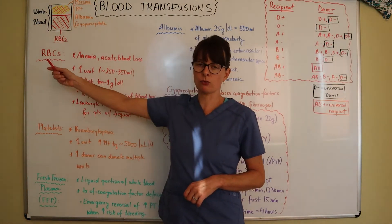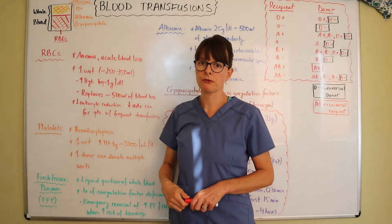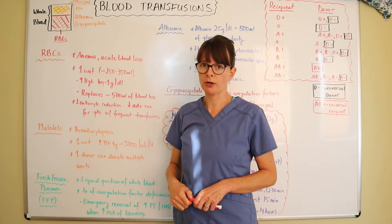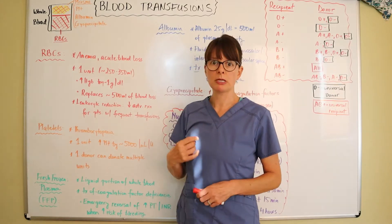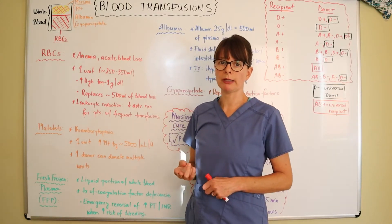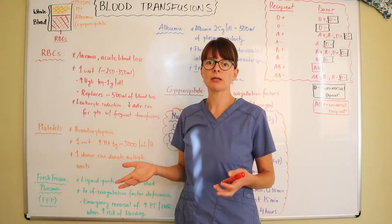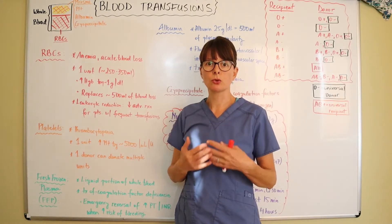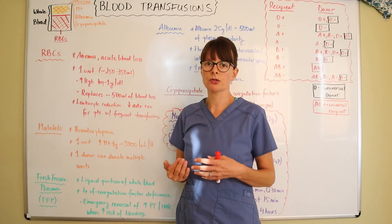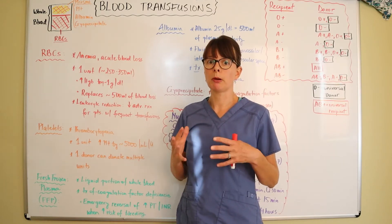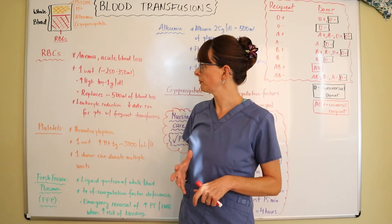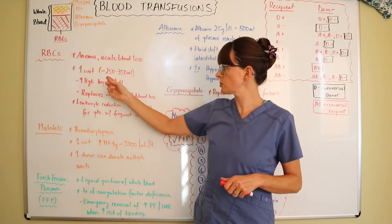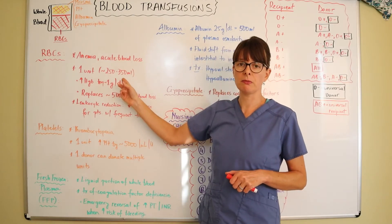RBCs or packed red cells are probably the most commonly transfused blood product. The indications would be anemia or acute blood loss, which is also a type of anemia, but keep in mind that also pertains to leukemia.